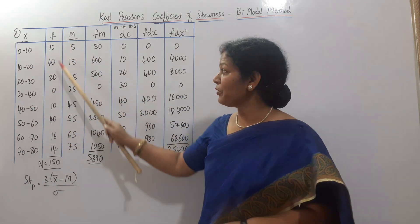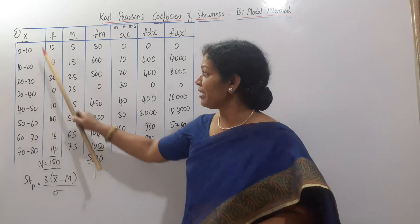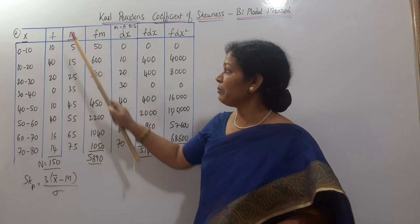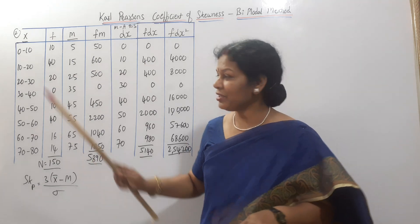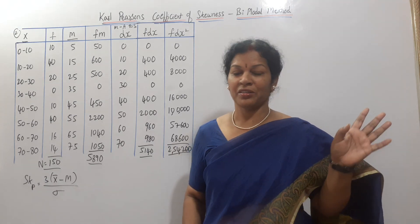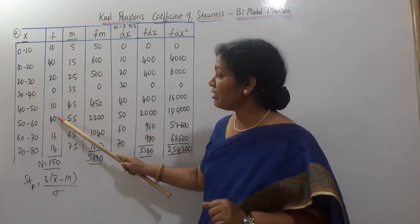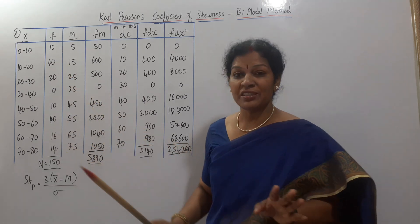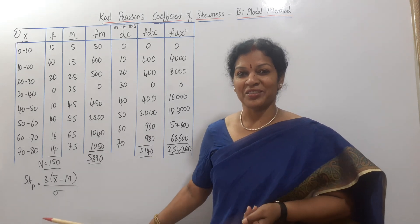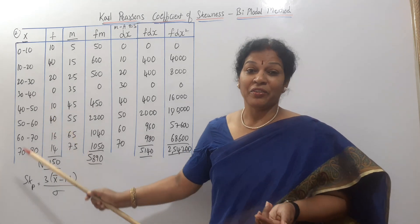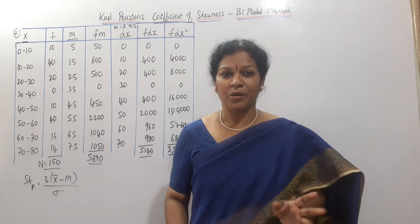X and frequency are given. Now, class intervals are 0 to 10, 10 to 20, and so on. Whenever you calculate Karl Pearson's coefficient of skewness, first check the frequency to see whether mode can be defined or not. Here, the most frequently occurring number is 40, but it repeats two times — that means this is a bimodal situation. We cannot define the mode, so we must use the bimodal formula.